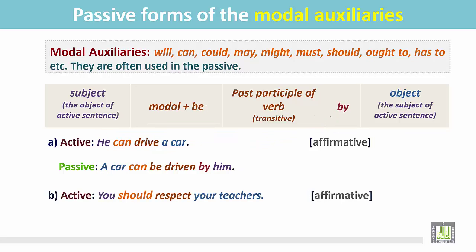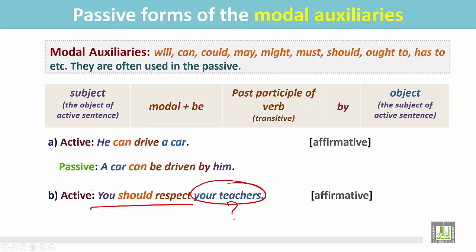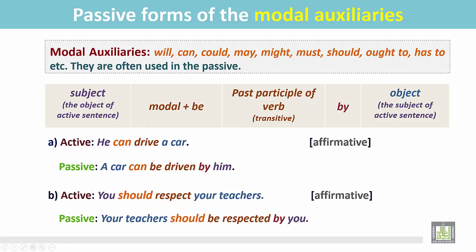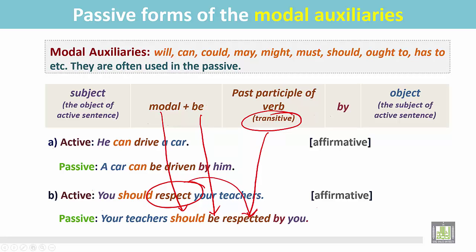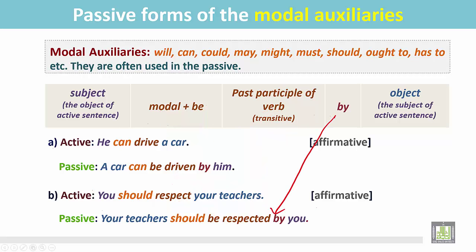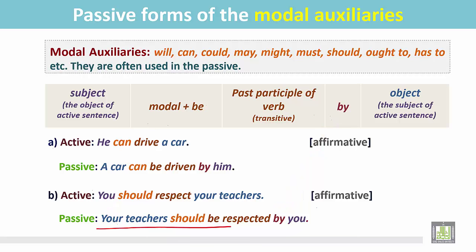Another example. 'You should respect your teachers.' This is an active sentence in the affirmative form as a statement. You should respect whom? Your teachers is the object for the verb 'respect.' We can change this active sentence into passive. In the passive, the object becomes the subject: 'your teachers.' Then according to the structure, 'should be.' The verb should be in the past participle form: 'respected by you.' Your teachers should be respected by you.